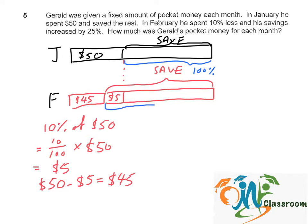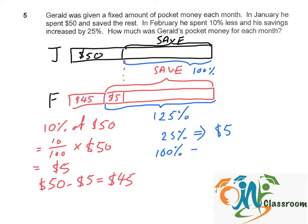If we see the savings in January as 100%, and the savings increased by 25%, that gives 125% in February. So 25% corresponds to this $5. Therefore, 100% of his savings would be 100 over 25 times $5, which equals $20.